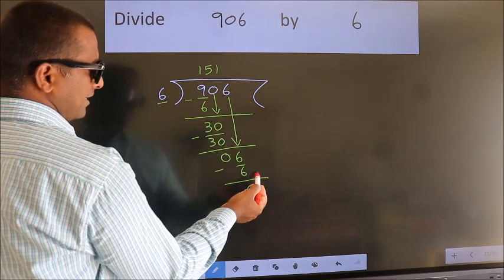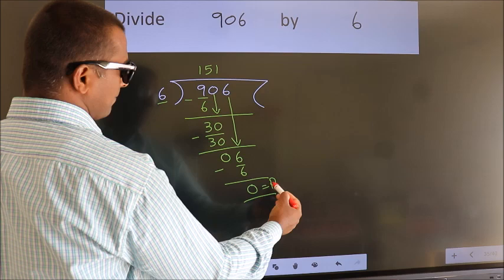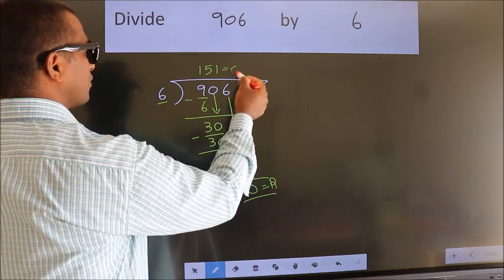No more numbers to bring down. So we stop here. This is our remainder. This is our quotient.